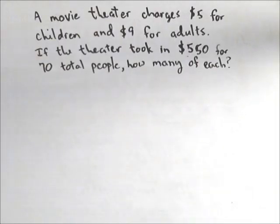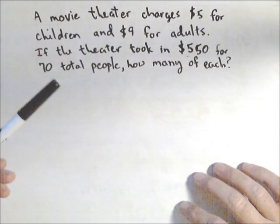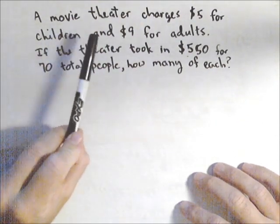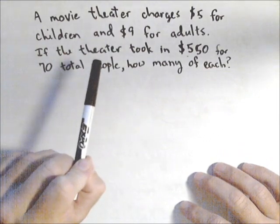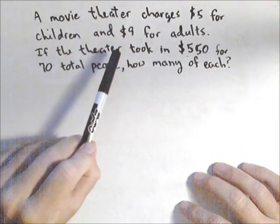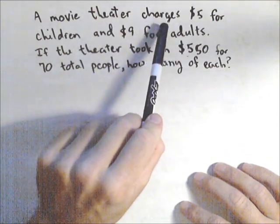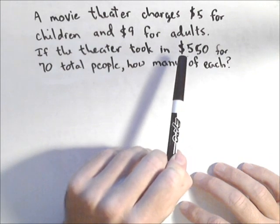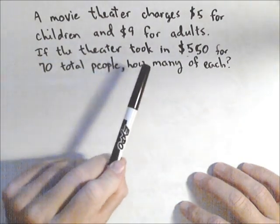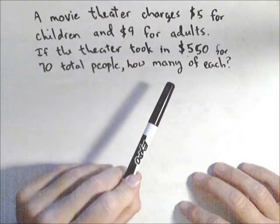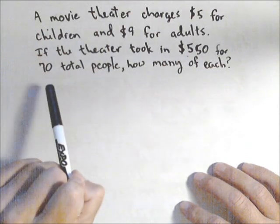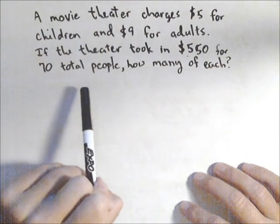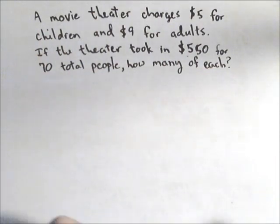In this video we're going to look at a typical systems of equations problem where we have some establishment — in this case a movie theater that charges separate prices for two different types of audiences: $5 for children and $9 for adults. We know the total the theater took in, $550 total, and that there were 70 people, but they want to know how many of each — how many kids, how many adults.